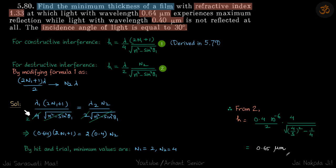Now let's come to the solution. The thickness of the film is the same in both cases—one is constructive, one is destructive. For lambda 1 and n1 it is constructive, so we put 2n1 plus 1. For lambda 2 and n2 it is destructive, and luckily the denominator will get cancelled, giving us a simple equation.